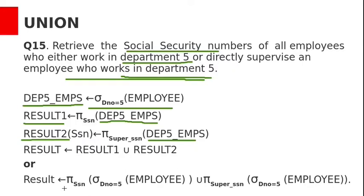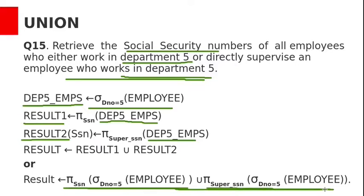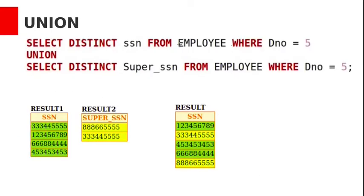Alternatively, we can write the same query by nesting all operations. This is the first query result and this is the second query result, and we take the union of these two results. The equivalent SQL query is: SELECT DISTINCT SSN FROM employee WHERE D_number = 5, UNION SELECT DISTINCT super_SSN FROM employee WHERE D_number = 5.